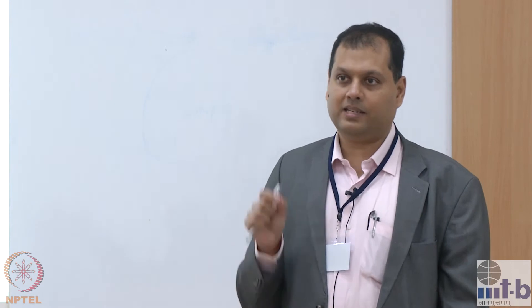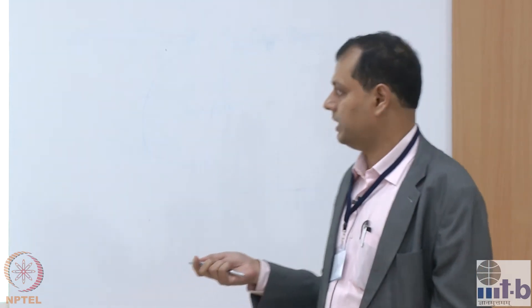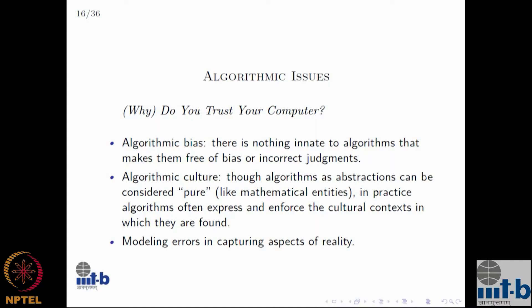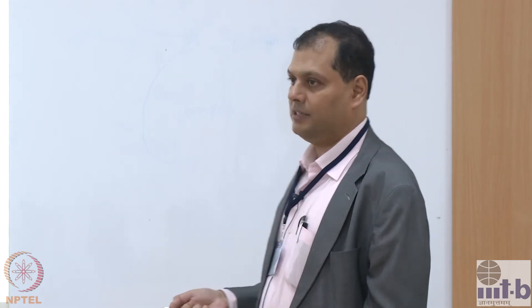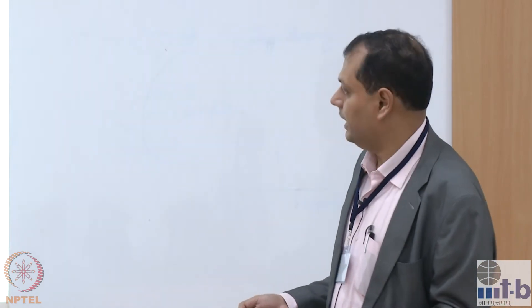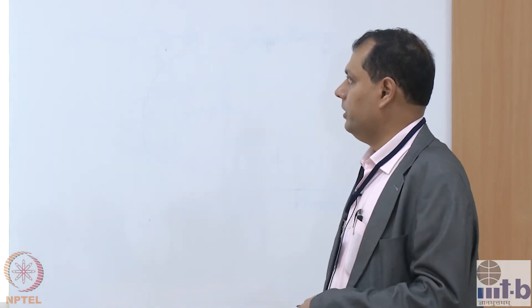There are also modeling errors, where we are not really trying to do anything biased or cultural, but we find that in some cases our model doesn't really capture reality in the right way. Therefore, the algorithm based on that model will not do the right thing. Algorithmic bias is significant nowadays because we have AI systems making judgments at scale — for things like home loans, medical triage, and parole — at the speed at which we want those judgments made.